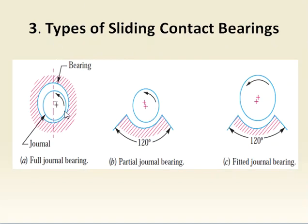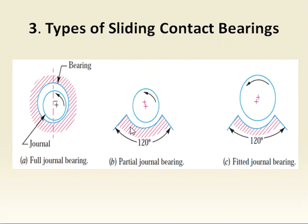Sliding contact bearings are further classified into three types. First, a full journal bearing: the fixed element completely surrounds the moving element, with some eccentricity — the axis of the fixed element and the center of the moving element are slightly offset with clearance between them. Second, a partial journal bearing: the fixed element covers only about 120 degrees of the shaft, and the shaft floats on the bearing, allowing it to carry load and rotate.